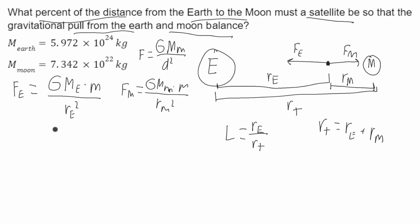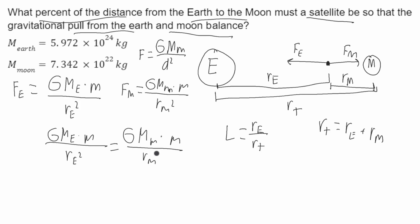Now I'm going to set these equal to each other because we know it balances. So it'll be G times the mass of the Earth, times the mass of the satellite, over RE squared, is equal to G times the mass of the Moon, times the mass of the satellite, over RM squared. The Gs cancel, as well as the mass of the satellite. We get the mass of the Earth over RE squared is equal to the mass of the Moon over RM squared.